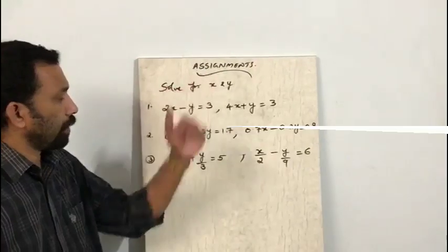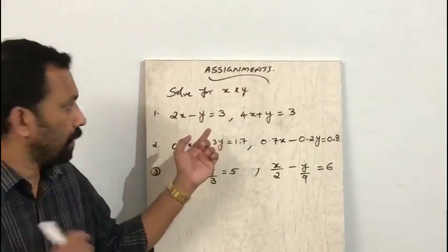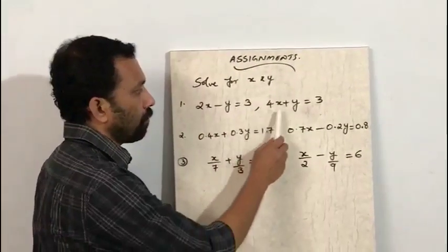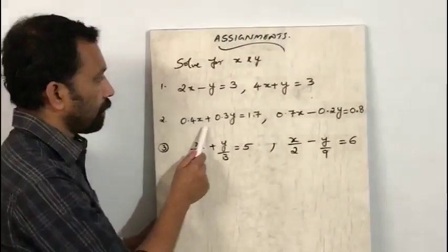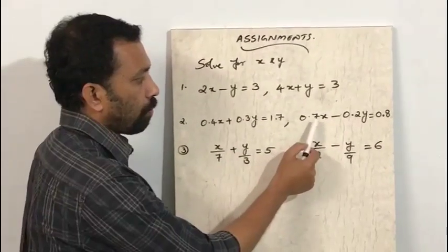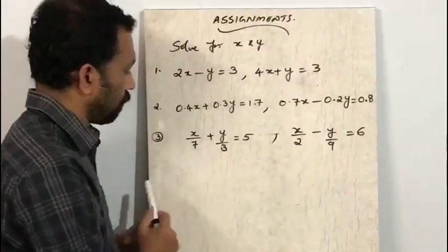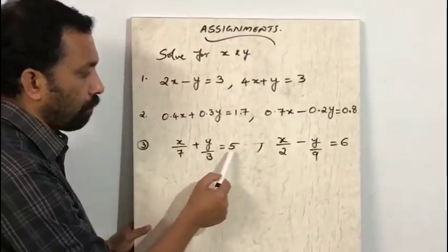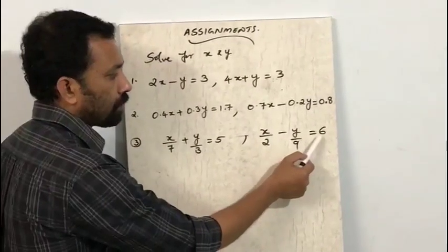Now try these assignments. Solve for x and y by substitution method. First question: 2x minus y equals 3 and 4x plus y equals 3. Second question: 0.4x plus 0.3y equals 1.7 and 0.7x minus 0.2y equals 0.8. Third question: x upon 7 plus y upon 3 equals 5 and x upon 2 minus y upon 9 equals 6. Thank you.